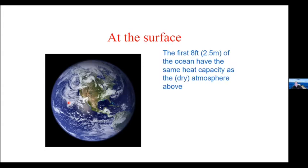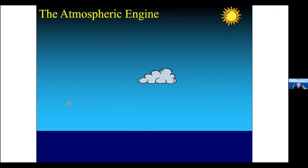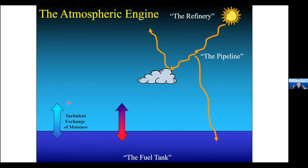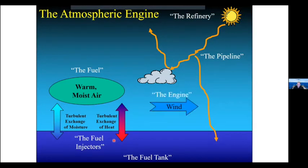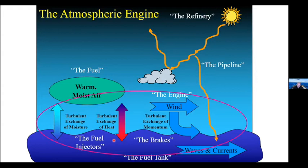Why bring up primary production? The first two and a half meters of the ocean have the same heat capacity as the dry atmosphere above — it takes the same energy to warm that two and a half meters as the entire atmosphere by one degree Fahrenheit. What's driving these processes? The sun drives the pipeline. The ocean acts as the fuel tank, driving exchange of moisture and heat between the ocean and atmosphere, which generates wind, waves, and currents that then mix the ocean. This circle of processes is what I study.